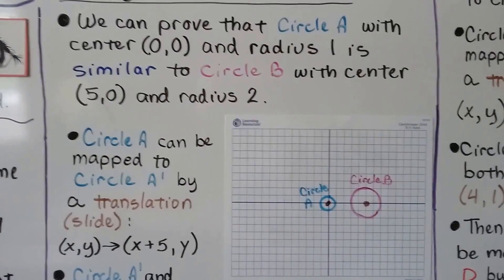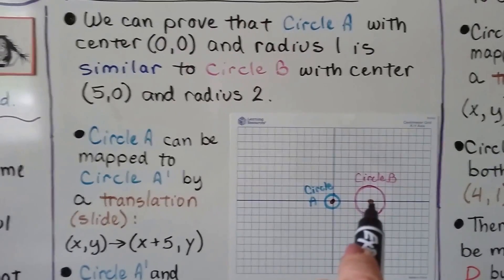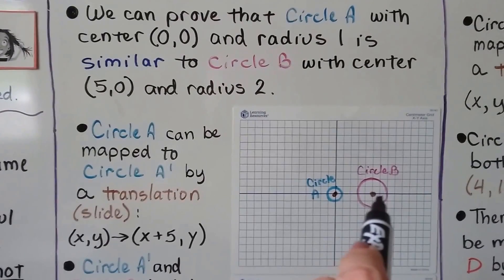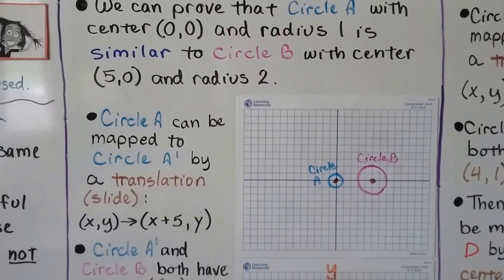It is similar to circle b with center five for x, zero for y, and radius two. So you can see there's two units away from its center all the way around. That's its radius.